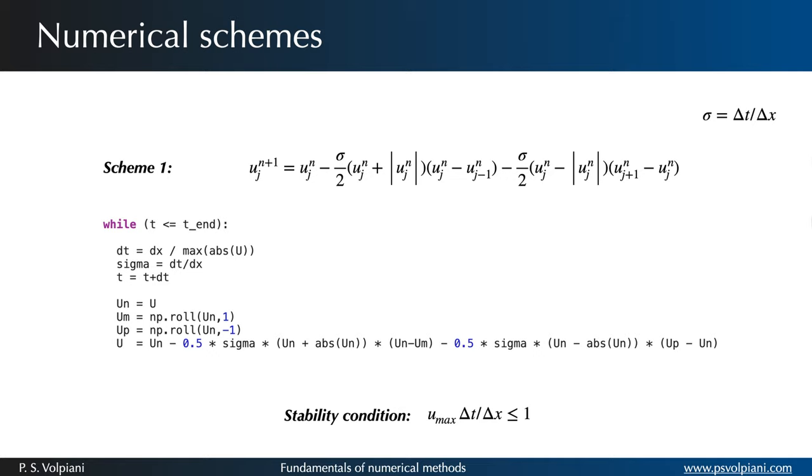However unlike the previous case the Burgers equation is no longer a linear problem. Since the advection speed is no longer constant it is necessary to have a variable time step to respect the CFL condition in all grid cells. In our routine the calculation of the time step at iteration n is done in the following way. Thus the CFL is equal to 1 in the cell where uj is maximum and less than 1 in the other cells.